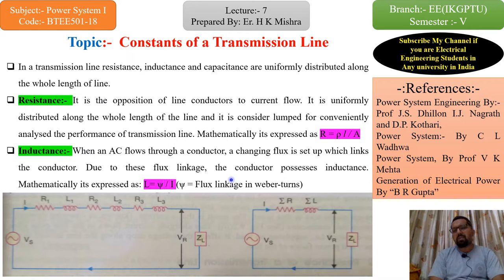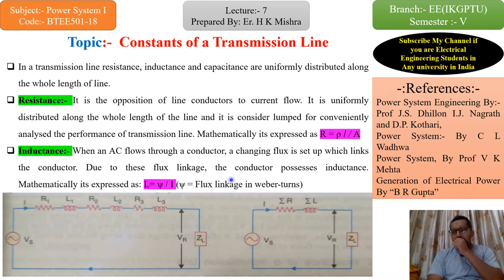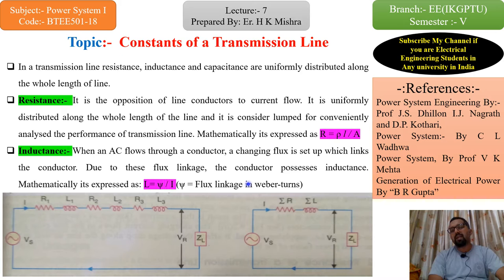When we talk about inductance and capacitance, inductance and capacitance are only possible in the case of AC. Because we know that XL is equal to 2πfL and XC is equal to 1 upon 2πfC. So frequency is the main key here.